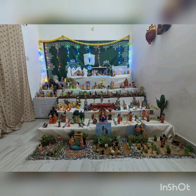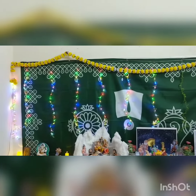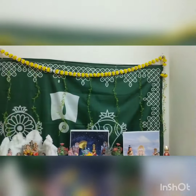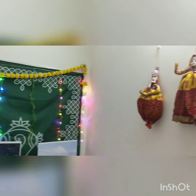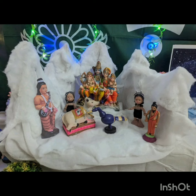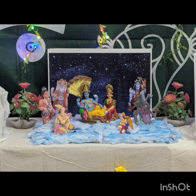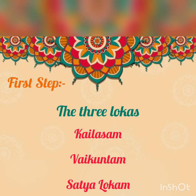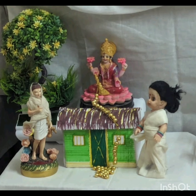This is the background decoration. Coming to the first step, we have the three lokas: Kailasham, Vaikuntam, and Satyaloka. Coming to the second step, the first scene is the Kanakadhara Sutra. Adi Shankaracharya was out to seek alms and happened to reach the doorstep of a very poor Brahmana woman.